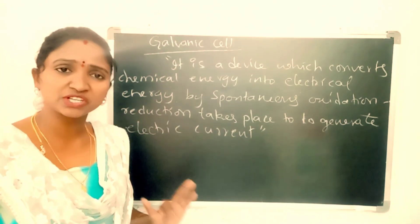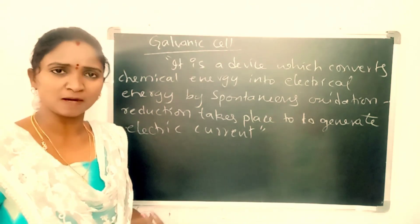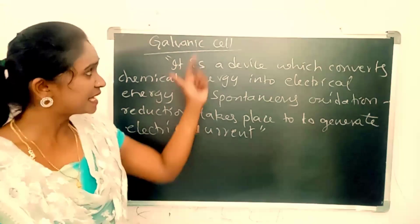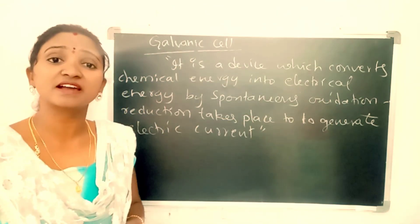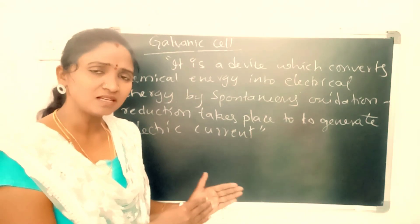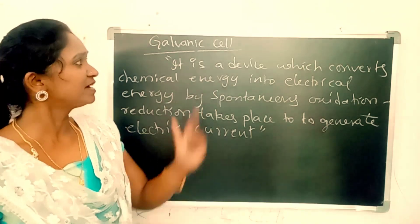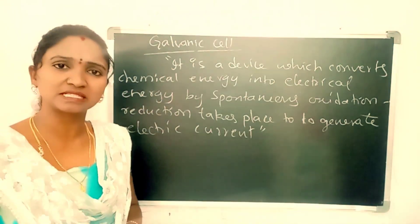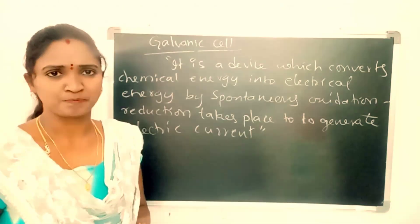So electricity produced in galvanic cell is by spontaneous oxidation-reduction reactions. The chemical energy is converted — that device is called as galvanic cell. We can take an example: that is Daniel cell, also called as electrochemical cell.